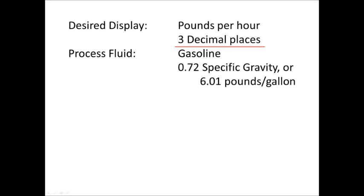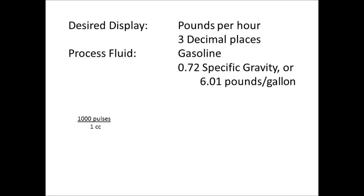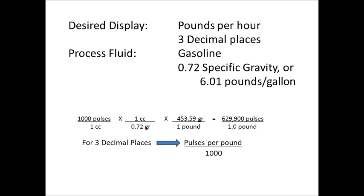First, we will calculate the number of pulses equal to one one-thousandth of a pound of liquid. We have a k-factor of 1000 pulses per cc. We multiply that by one cc per 0.72 grams, followed by a multiplication of 453.59 grams per pound, and we come up with a k-factor of 629,900 pulses per one pound. To read in three decimal places, we take the pulses per pound and divide by 1000, giving us a k-factor of 629.9. That's the k-factor we'll input into our display.